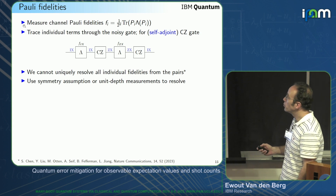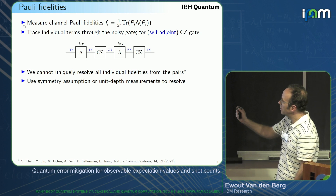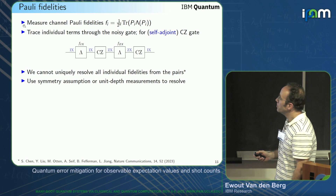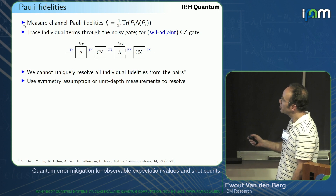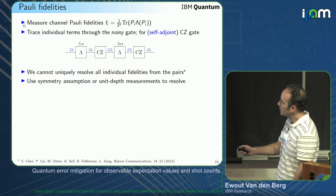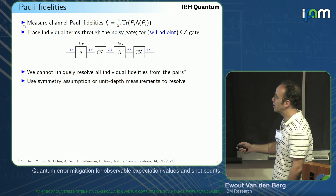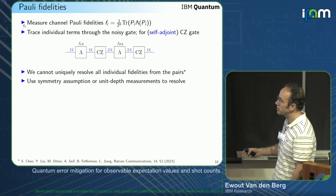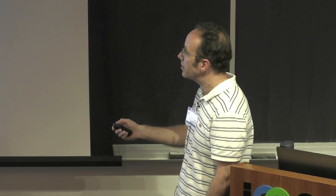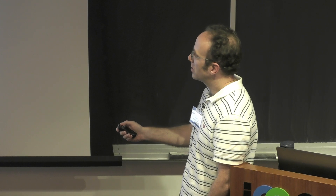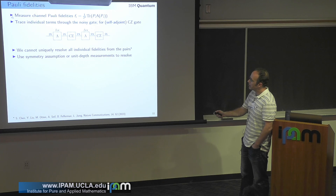How do we characterize the Pauli noise channel? We can measure the Pauli fidelities associated with the channel — defined as: you have your Pauli, apply the noise channel, and take the inner product. In the context of a gate, you trace individual terms through the noisy gate. For example, with a self-adjoint CZ gate: start with Pauli IX, apply the noise channel incurring fidelity f(IX), apply the ideal CZ to get ZX, apply the noisy gate again getting fidelity f(ZX), then map ZX back to IX. We now have a product of two fidelities at the same start and end point, which we can measure.